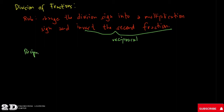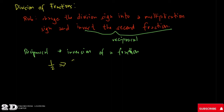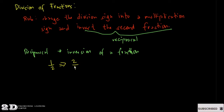This process is called getting the reciprocal of a fraction. A reciprocal is the inversion of a fraction — you exchange the places of the numerator and denominator. For example, the reciprocal of one-half is two over one. The denominator two becomes the numerator, and the numerator one becomes the denominator. In division, we use this concept of reciprocal.